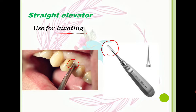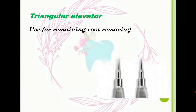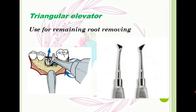The second type of elevator is called a triangular elevator. Pay attention to the blade — it looks like a triangle, that's why it's called a triangular elevator. This is used for removing remaining roots after extraction. If a root fracture happens during extraction, we can use this elevator to reach and remove the remaining root inside the socket.